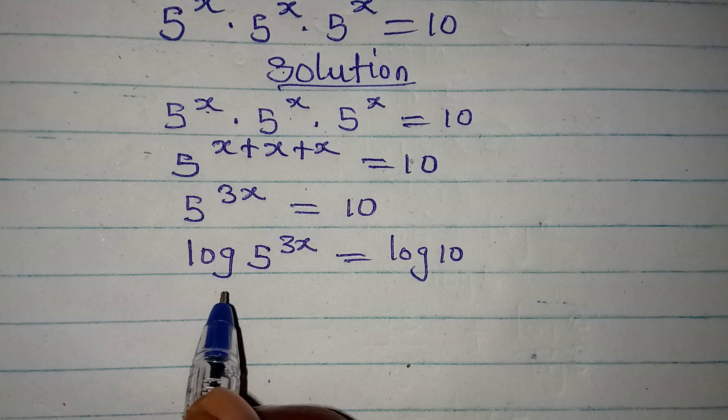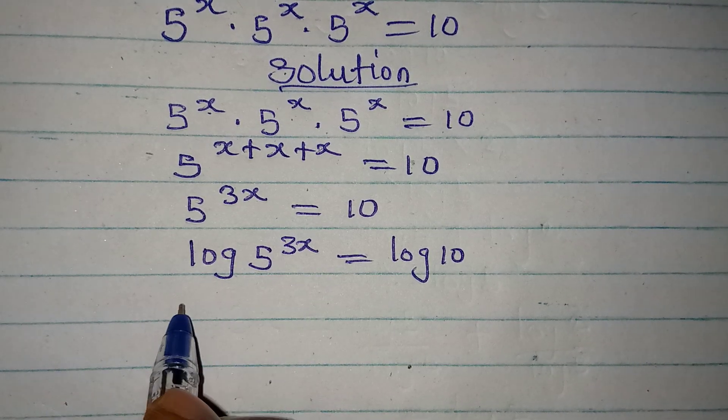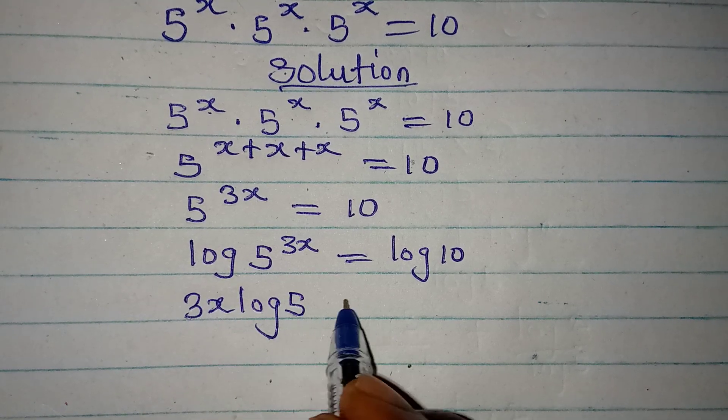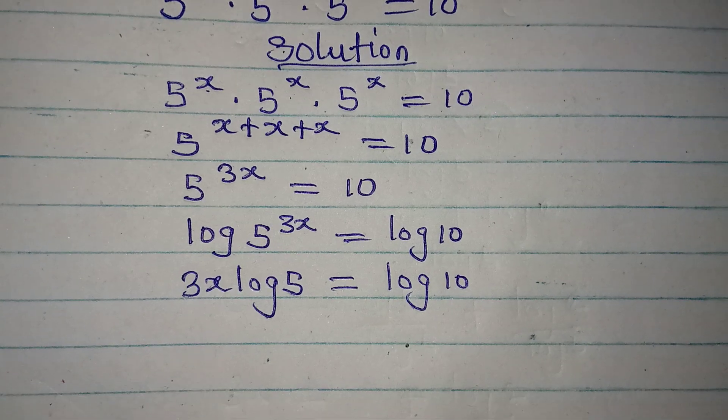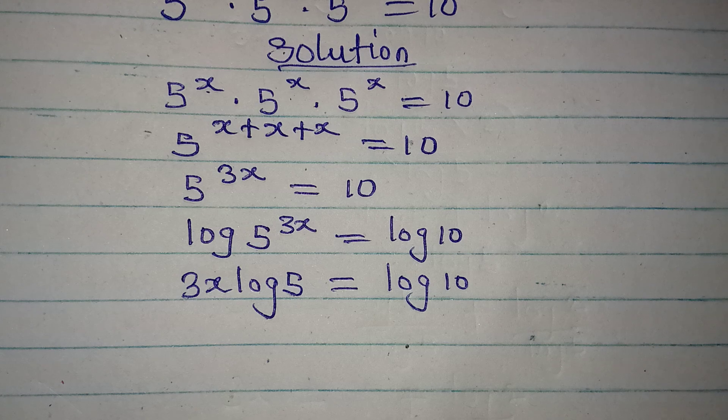Now what do I do? There's this law that says the powers can always go behind. So we have 3x log 5, which would be equal to log 10. Now what do I do? Divide both sides by log 5.